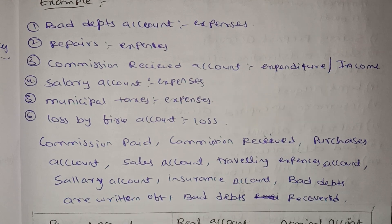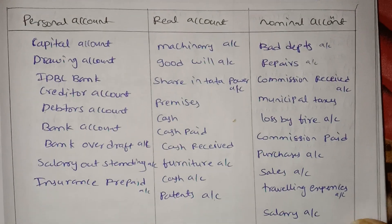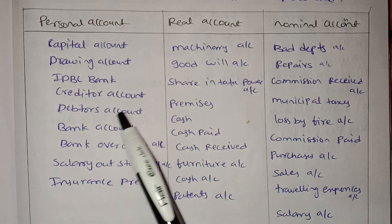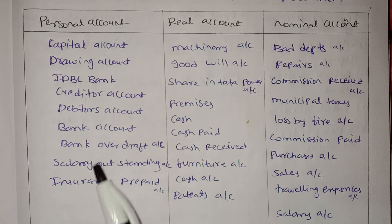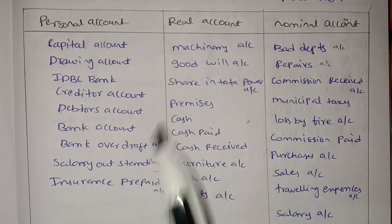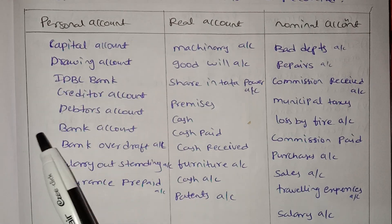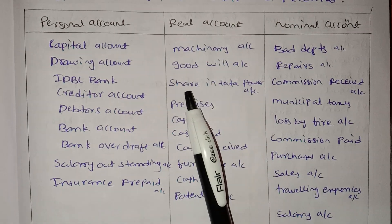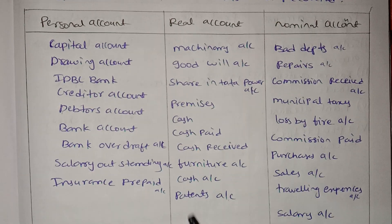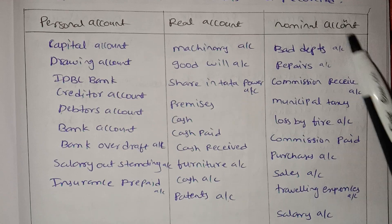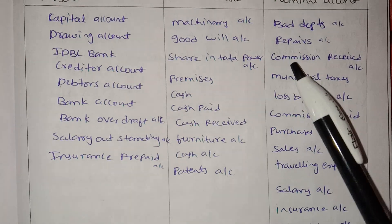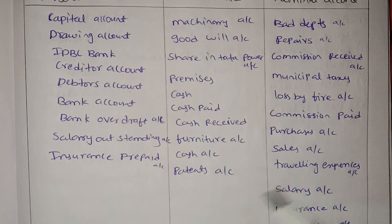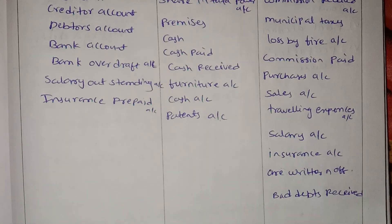To summarize: personal account includes capital account, drawing account, bank account, creditors, debtors, salary outstanding, insurance prepaid. Real account includes goodwill account (intangible), shares, premises, cash received. Nominal account includes bad debts, repair account, commission received account, municipal taxes, loss by fire, purchases, sales, traveling expenditures, salary, insurance account. This is the complete explanation of all three types of accounts.